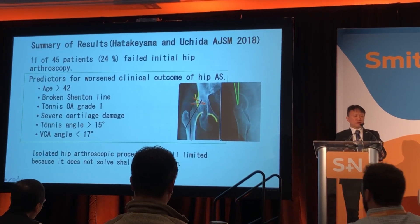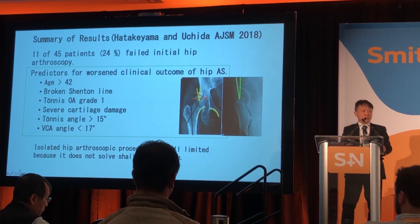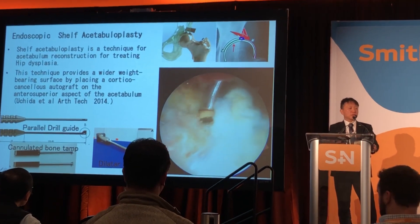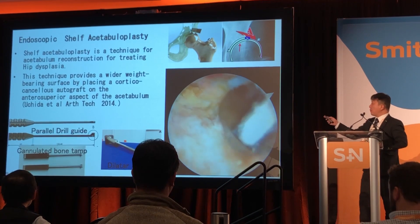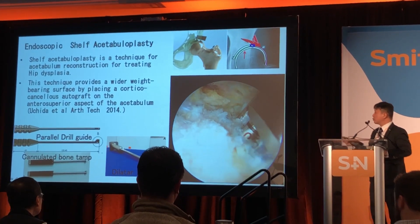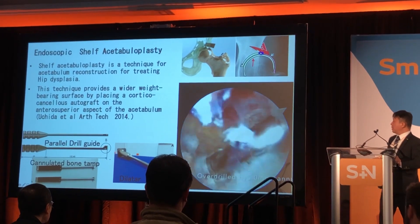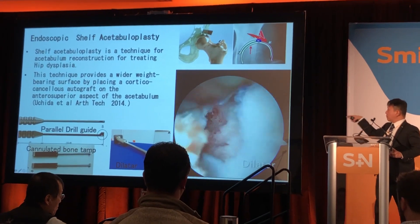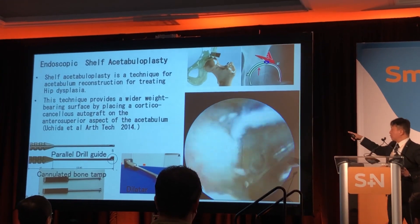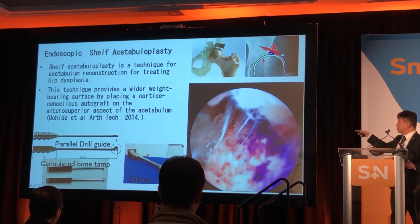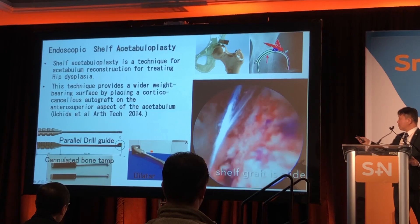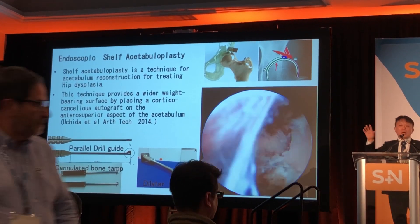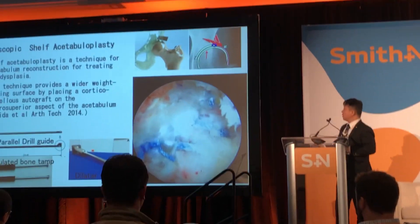We realized isolated hip arthroscopy is still limited because it does not solve all problems. So we developed endoscopic shelf arthroplasty, a technique for acetabular reconstruction to treat hip dysplasia. Using a parallel drill guide and cannulated bone tap director produced by Smith & Nephew, we harvest bone graft from the iliac crest. A 30-degree gouge is used outside the capsule, the parallel drill guide is placed, and grafts are press-fit and tapped into position using cannulated bone taps. An additional graft is placed above the shelf graft to provide further support.